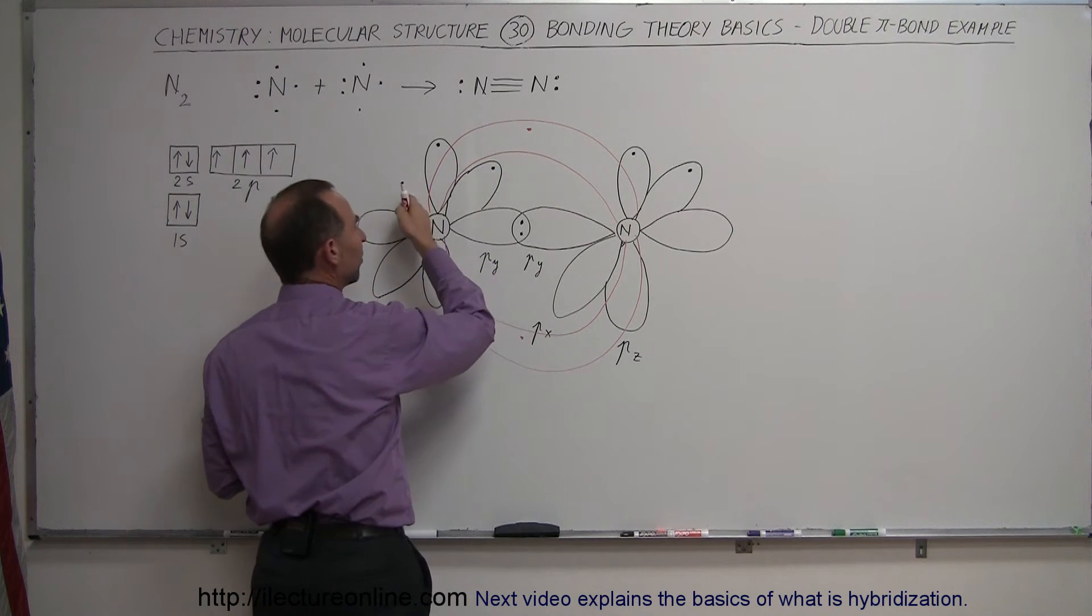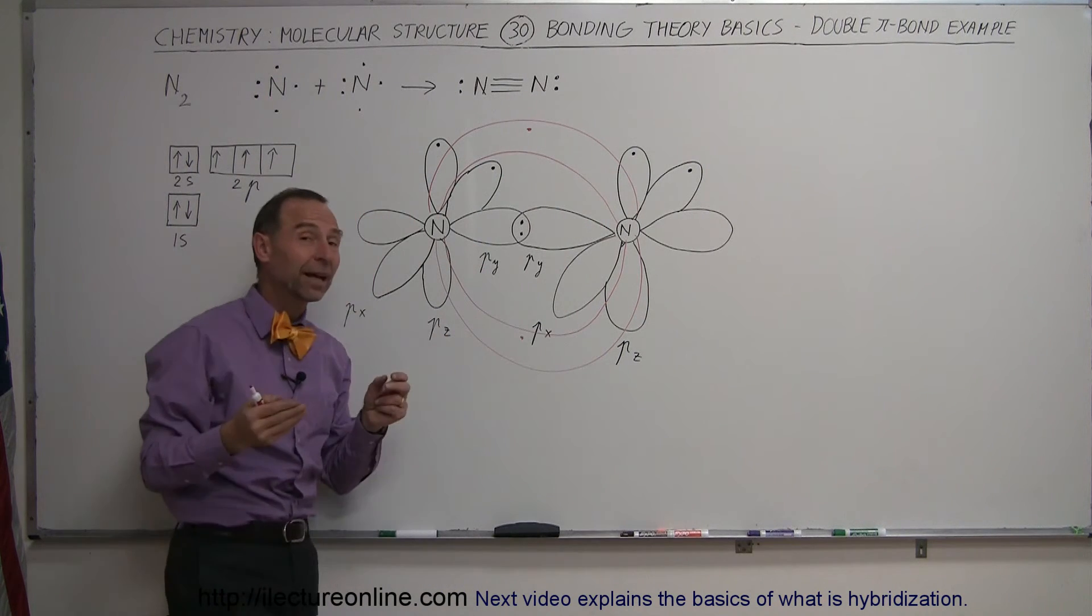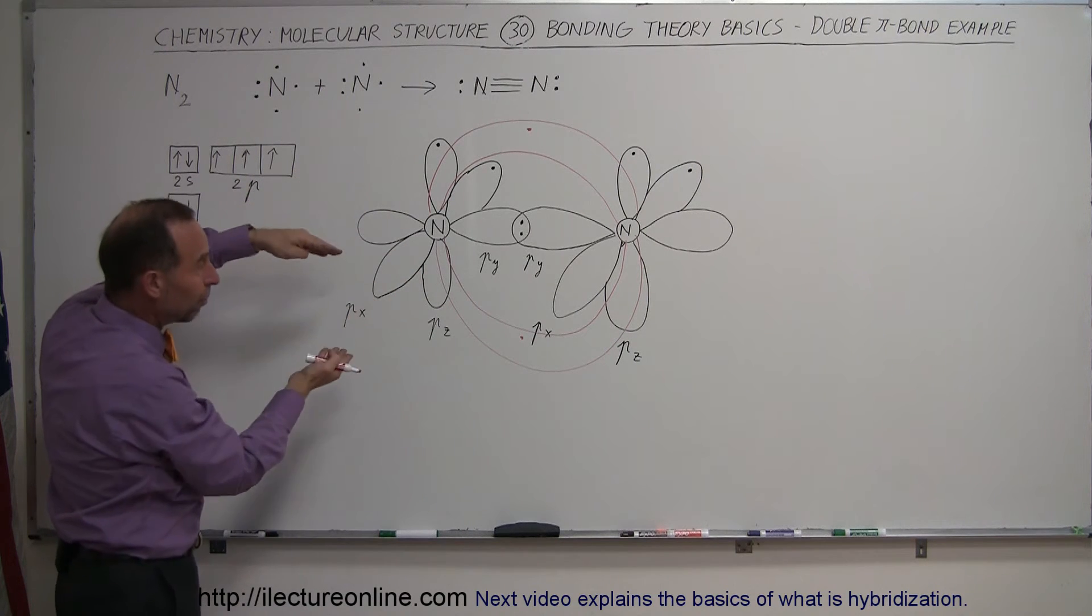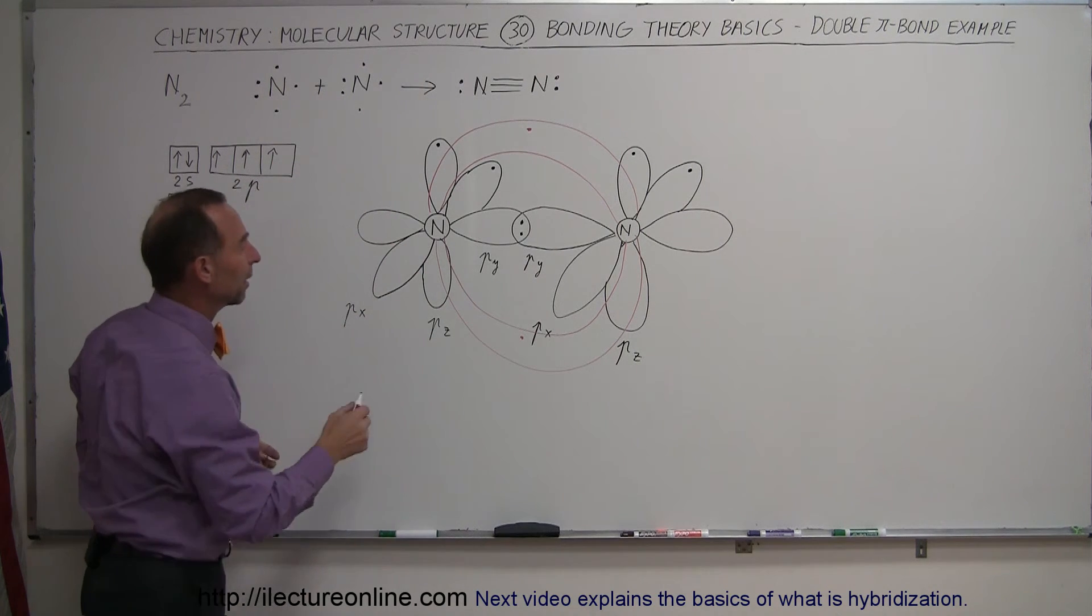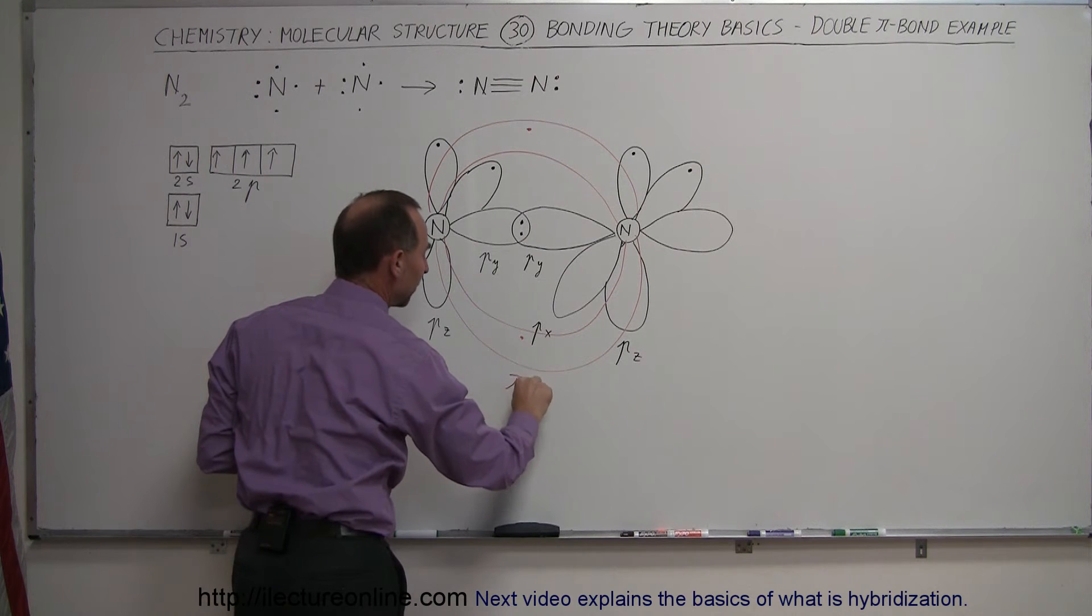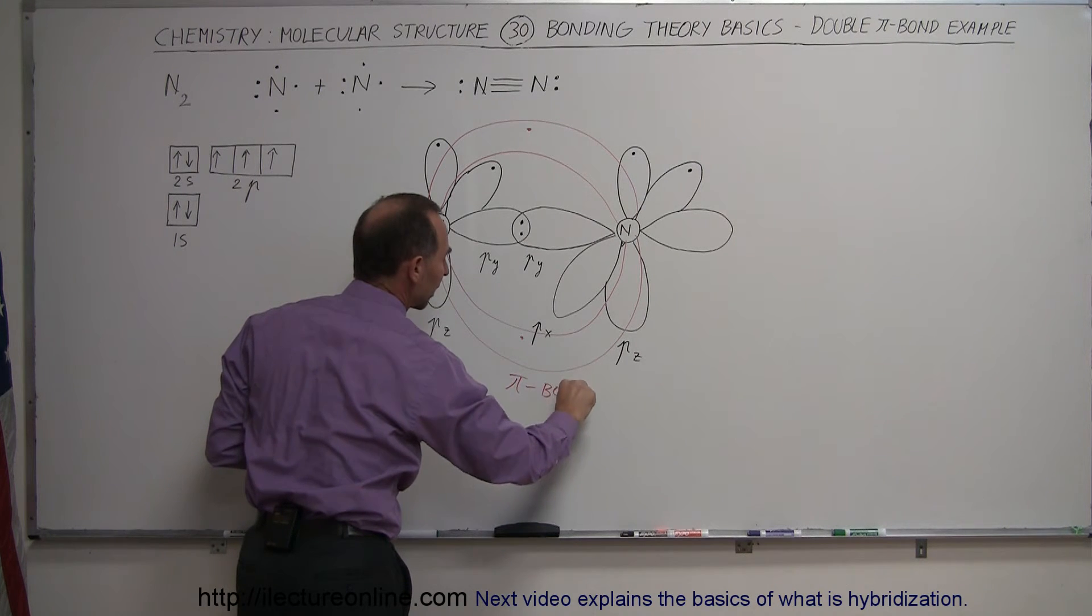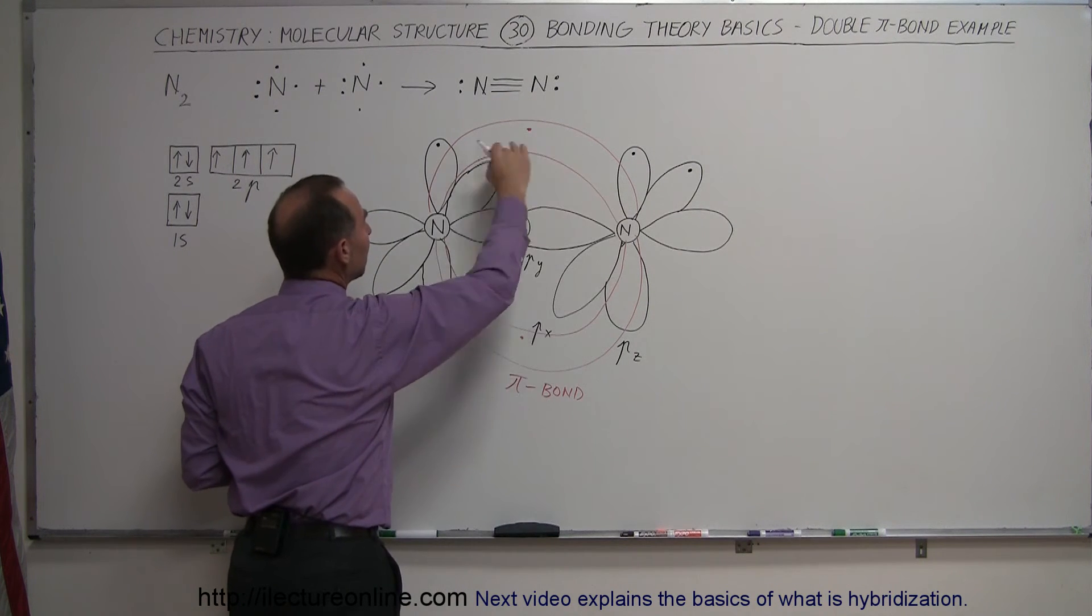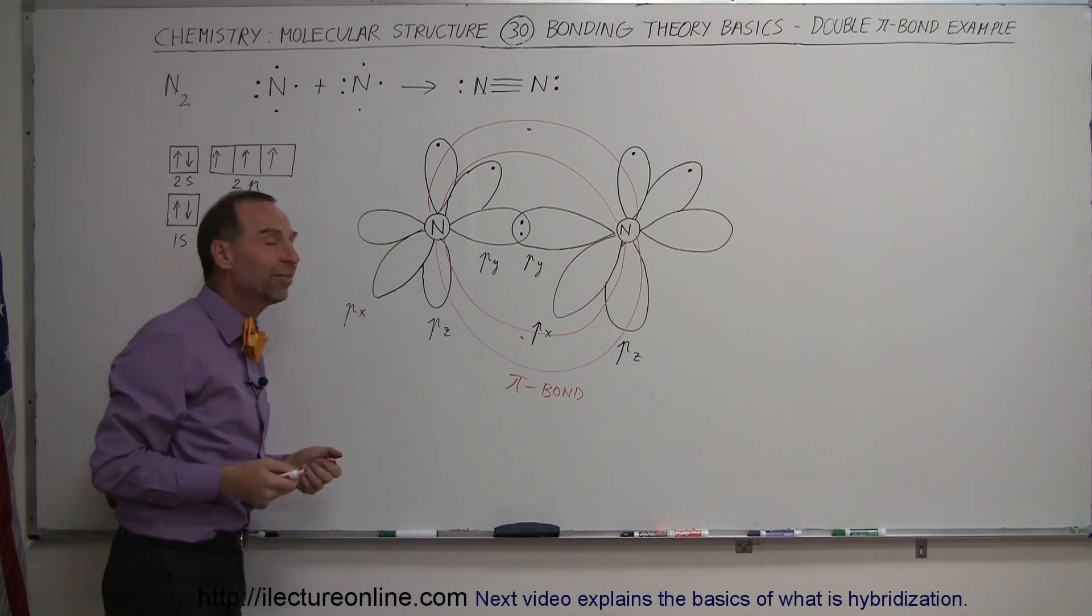That would be one electron from this nitrogen and one electron from that nitrogen. We form these bonds like that around, shaped like that, and this is a single pi bond that would be accomplished by joining the pz orbitals together.